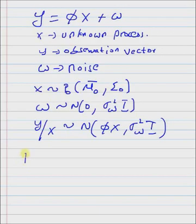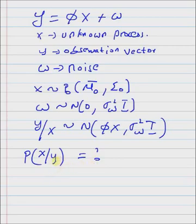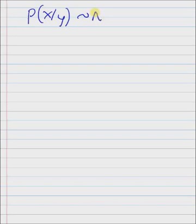Our goal is to find the posterior distribution p(x|y) — specifically, to find the moments of this distribution. From Bayesian parameter estimation, we know that when the prior density and the likelihood density are Gaussian distributions, the posterior density is also a Gaussian distribution. The posterior density p(x|y) will have the structure of a normal distribution with mean μ_n and covariance Σ_n.